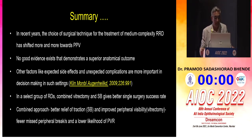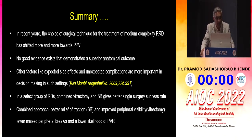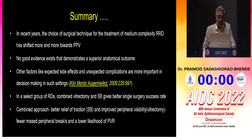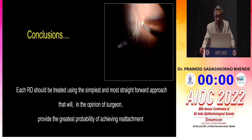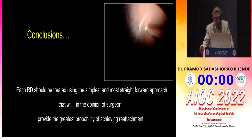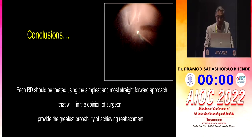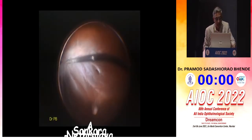To summarize: in recent years, surgical techniques for medium-complex detachment are shifting more towards vitrectomy. No evidence exists demonstrating superior anatomical outcomes. Other factors like expected side effects and unexplained complications are more important in decision making. In a select group of detachments, combined vitrectomy and buckling gives a better single-surgery success rate — which I give more importance to than final outcome success. This combined approach gives better relief of traction with improved peripheral visibility, fewer missed breaks, and lower likelihood of PVR. Each detachment should be treated using the simplest and most straightforward approach that provides the greatest possibility of achieving reattachment in a single surgery.